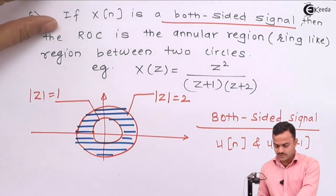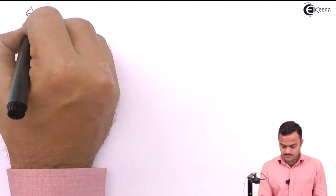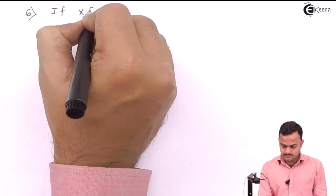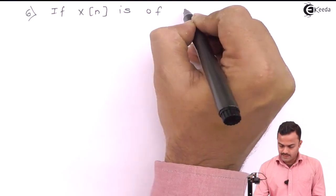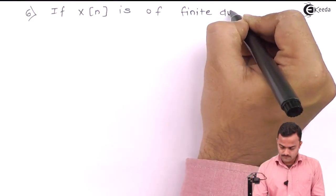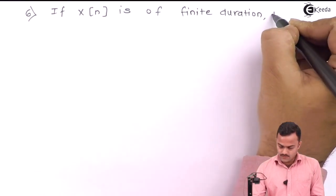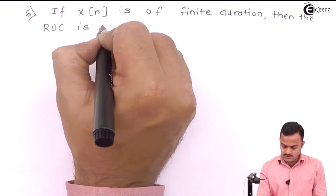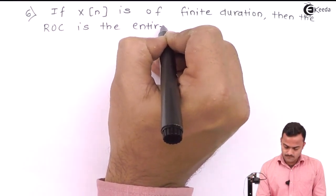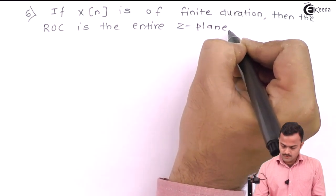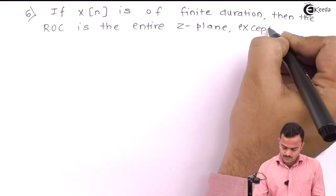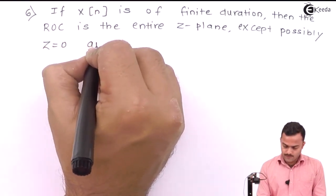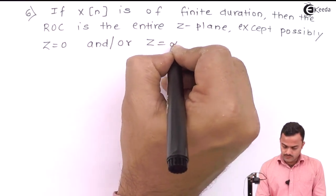Let's go to the last property of the ROC. What if the signal is finite? If x(n) is of finite duration, then the ROC is the entire Z-plane, possibly except z = 0 or z = infinity.